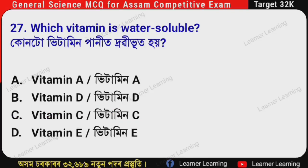Next question: Which vitamin is water soluble? (Assamese: Konto vitamin panit drovi bhu to hoi?) The correct option is Option C — Vitamin C. Vitamin C is water soluble.